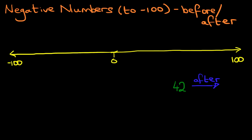Now after means we are going to the right of the number line. That means going that way. And you simply count forwards. After 42 is? That's right, it is 43.